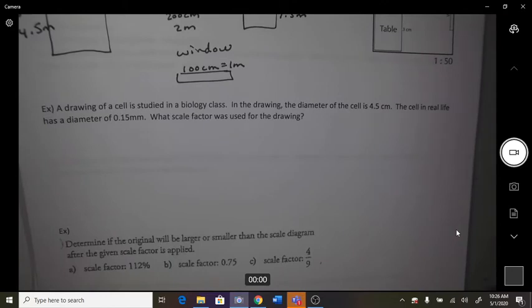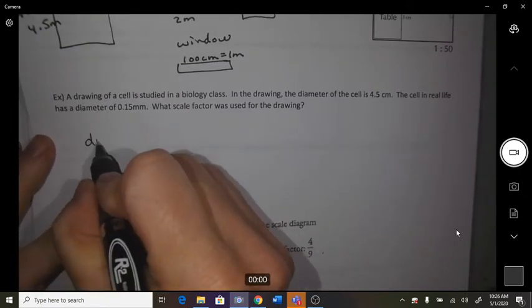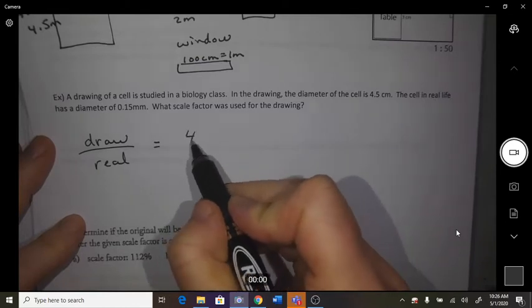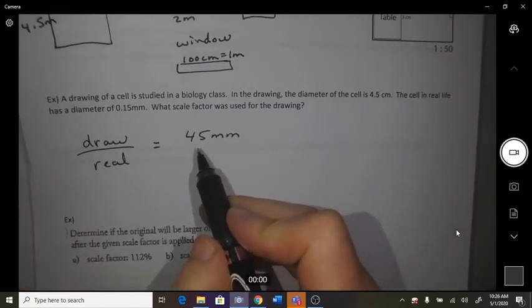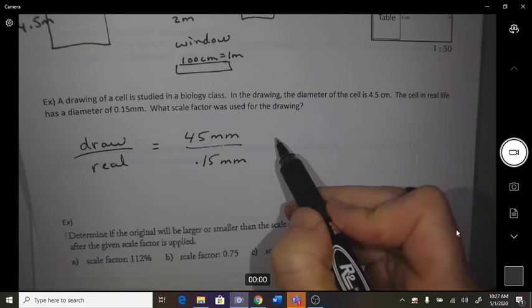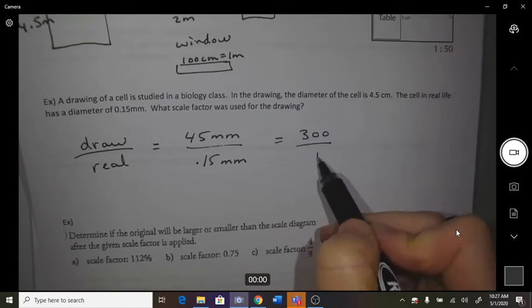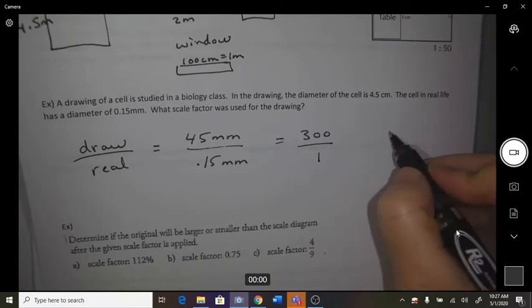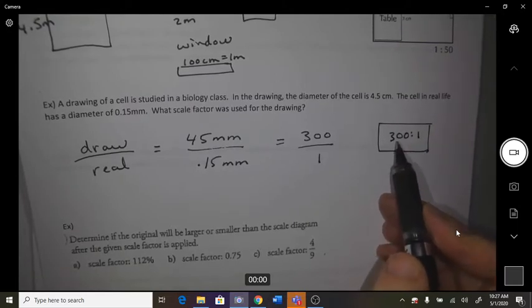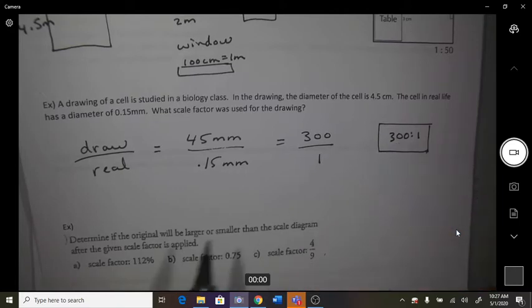A drawing of a cell studied in biology. In the drawing, the diameter of the cell is 4.5 centimeters. The cell in real life has a diameter of 0.15 millimeters. So what scale was used? So the drawing to the real, the drawing is 45 millimeters for the diameter, and 0.15 millimeters is the real. So this scale is 300 to 1. So every 300 millimeters on the drawing would only be 1 in real life.